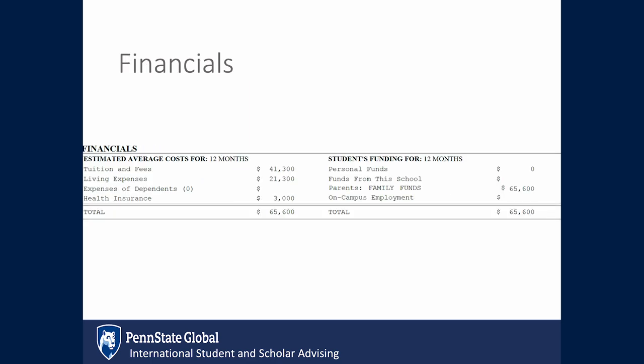The financial guarantee section lists the average cost for 12 months. We keep these figures at a minimum, and this is not a bill and not what you may find on your tuition bill.